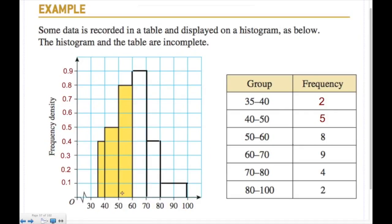For the 40 to 50 bar the frequency density is 0.5. An important understanding here: because frequency density equals frequency divided by class width, it means frequency equals frequency density times class width — so the area of the bar represents the frequency. So 10 times 0.5 gives a frequency of 5. For the first bar, 5 times 0.4 gives a frequency of 2.